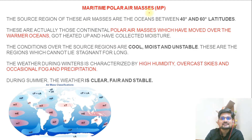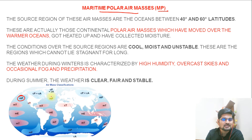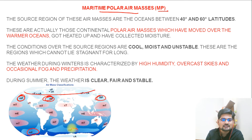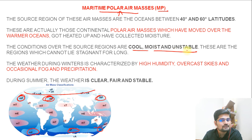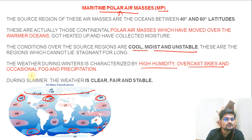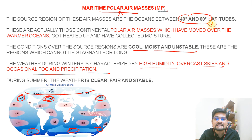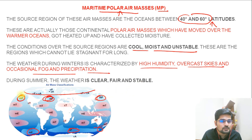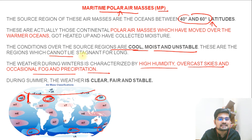The second type is MP — maritime polar air mass. Maritime means oceanic and polar means close to the polar belt. MP is found in both hemispheres. Its nature is cool, moist, and unstable, with high humidity, overcast skies, occasional fog, and precipitation. It is found in the zone of mixing at 40 to 60 degrees latitude, which is why it is not very stable — there is mixing of air. These regions cannot stagnate for long, but still have certain pockets of air masses. During summer, the weather over MP source regions is clear, fair, and stable.